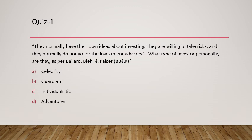The first quiz question is about a type of investor described as follows: they normally have their own ideas about investing, they are willing to take risks, and they normally do not go to investment advisors. As per the Ballard, Bale and Kaiser model, these investors are defined as adventurers. Adventurers do not go to investment advisors and they have their own ideas about investing.